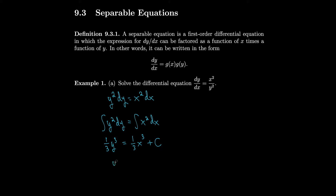Then I just solve for y. I multiply by three and take the cube root, getting y equals the cube root of x cubed plus 3c. But three times a constant is just as arbitrary as another constant, so I rename it: y equals the cube root of x cubed plus k, where k replaces my 3c.